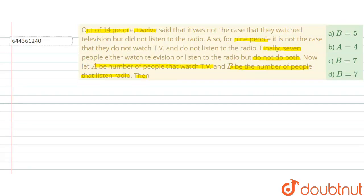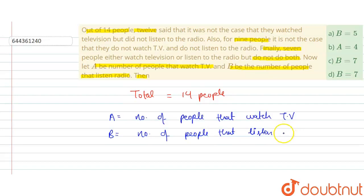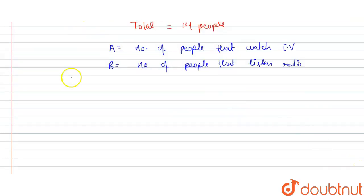First, we write the total, which is 14 people. A is the number of people that watch TV, and B is the number of people that listen to the radio. Now we take three cases: Case 1, Case 2, and Case 3.